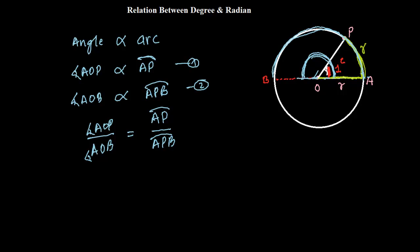Let's put the values now. What is angle AOP? Angle AOP is 1 radian. I already told you. 1 radian. And what is angle AOB? We know that this is 180 degrees. This is 180 degrees.